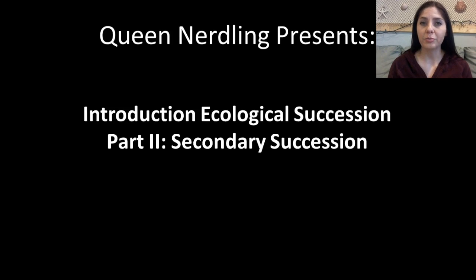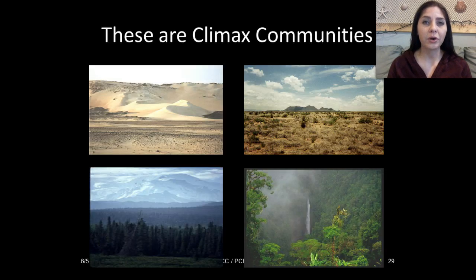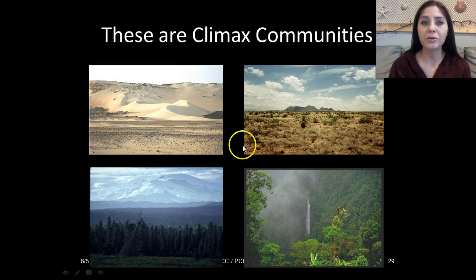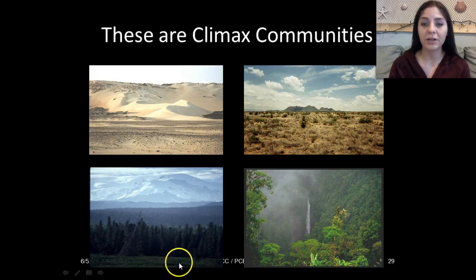Previously, we discussed primary succession and what ecological succession was. At the end of our previous lecture, we ended talking about climax communities. We had desert climax communities, a coniferous forest climax community, as well as a tropical rainforest.